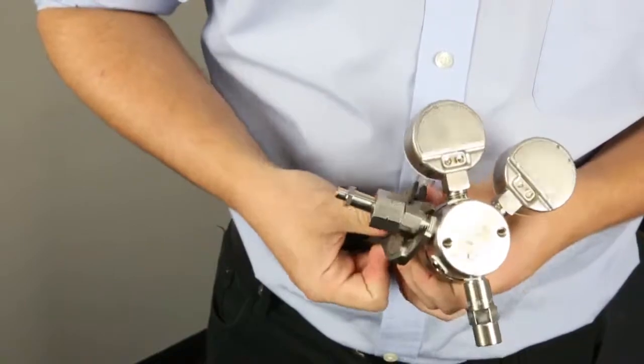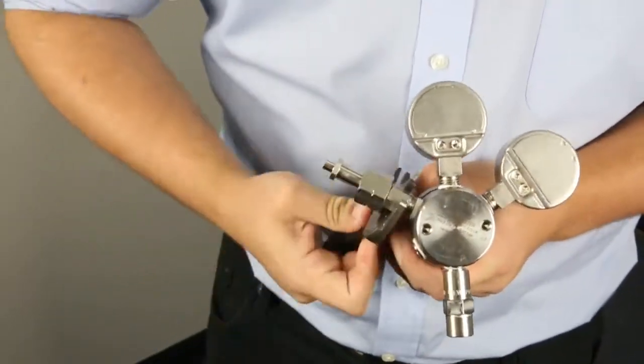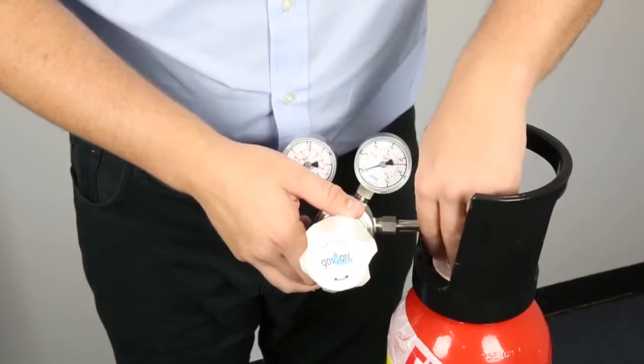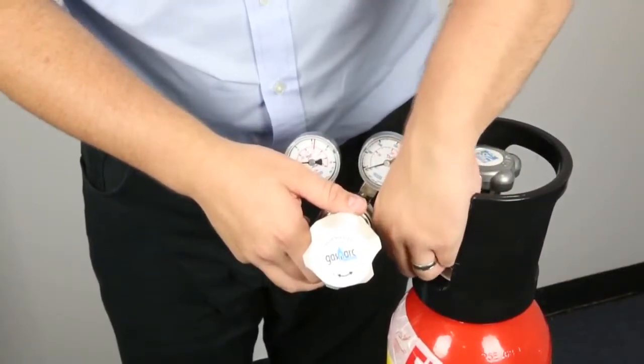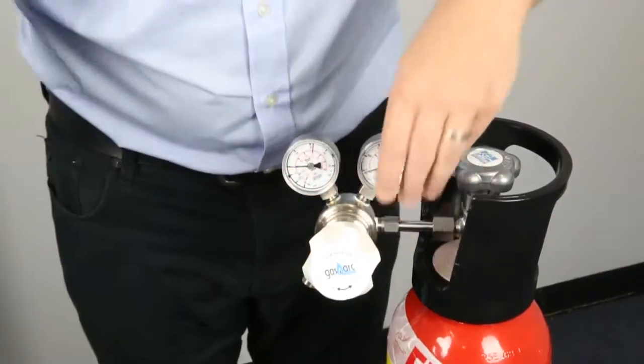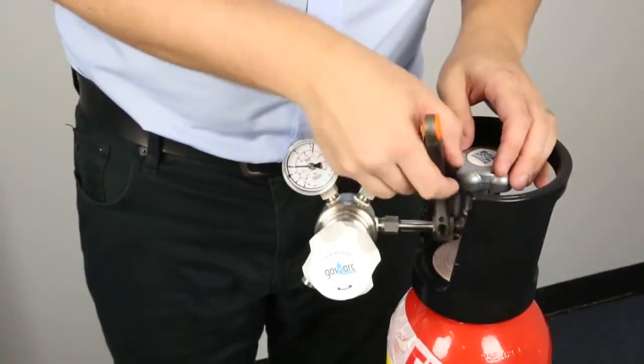Once taped, simply screw the connector into the regulator and tighten until snug. Once the cylinder connector is correctly taped and installed into the regulator, simply screw the other end into the cylinder valve and finger tighten. Using a wrench, slowly tighten until snug.